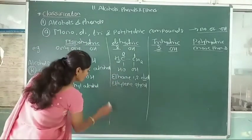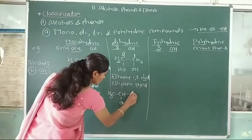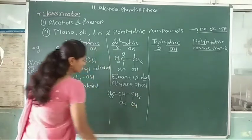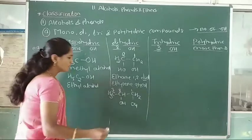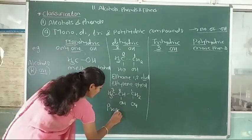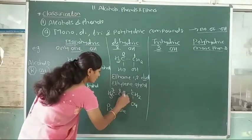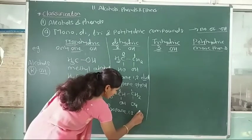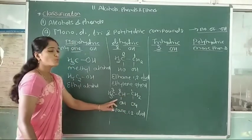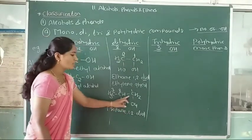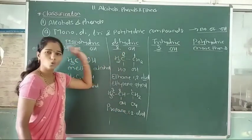Another example: CH3OH–CHOH–CH2OH — this is the first, second, and third carbon. Name of this compound is propane-1,2-diol, commonly known as propylene glycol. These are two examples of dihydric alcohols, where two hydroxy groups are with different carbon atoms — called diols or glycols.